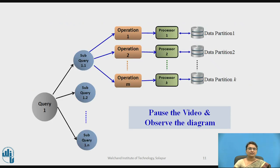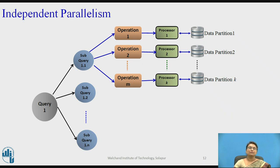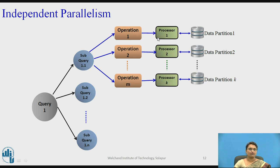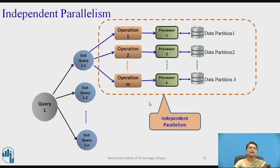Observe this diagram — there is a difference between the earlier diagram and this one. This illustrates independent parallelism. Operations 1, 2, through m are executing in parallel but are not dependent on each other. The output of one operation is not given as input to another — operation 2 is not dependent on operation 1, and operation m is not dependent on any of the earlier operations. This is called independent parallelism because every operation is independently working.